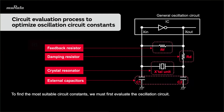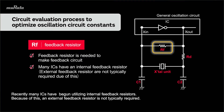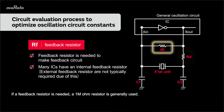To find the most suitable circuit constants, we must first evaluate the oscillation circuit. I'd like to begin by explaining the role of the feedback resistor. The feedback resistor is implemented to create a feedback circuit in the oscillation circuit. Recently, many ICs have begun utilizing internal feedback resistors. Because of this, an external feedback resistor is not typically required. If a feedback resistor is needed, a 1 megaohm resistor is generally used.